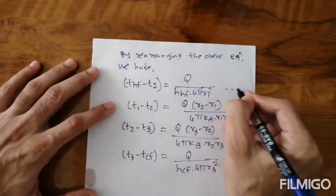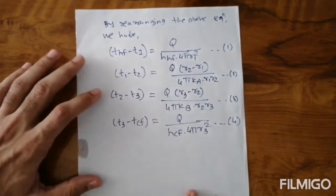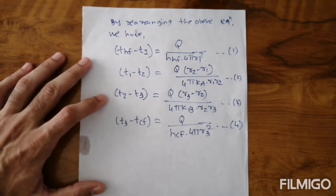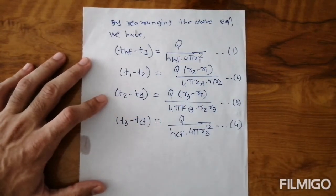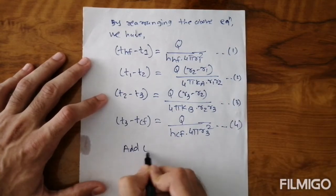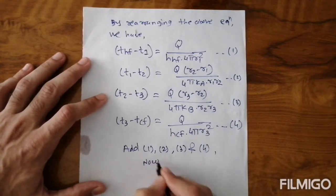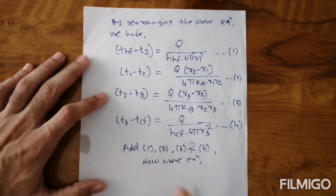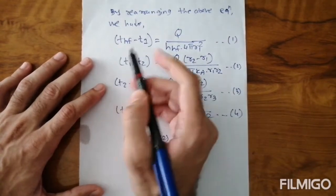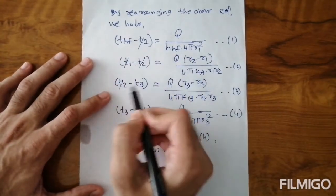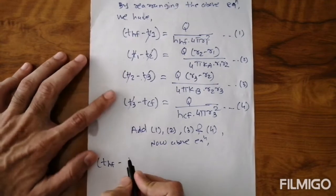We number these as equations 1, 2, 3, and 4. Now we add all four equations. The intermediate temperatures cancel: −T1 + T1, −T2 + T2, and −T3 + T3 all cancel out. The left-hand side becomes THF − TCF.